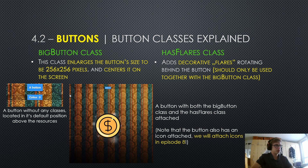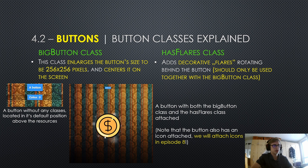I have also provided some images here. We can see a button without any classes located in its default position above the resources — it's looking pretty plain and boring. But here we have a button with both the big button class and the has flares class attached. Notice how it's in the center of the screen, and these white spots are the has flares class — you can't really see them rotating right now because this is a static image, but in your game they will be rotating behind the button, making it sort of pop out.